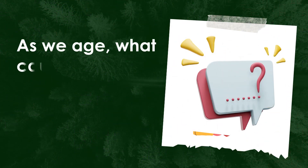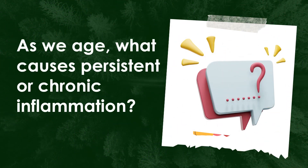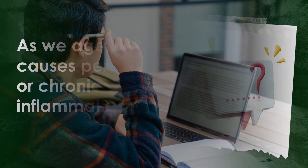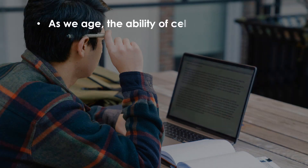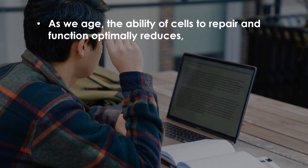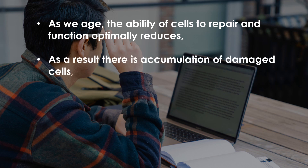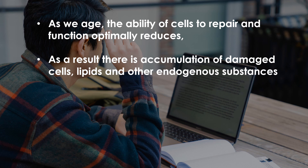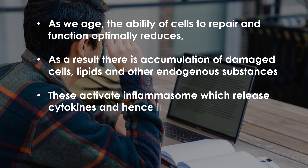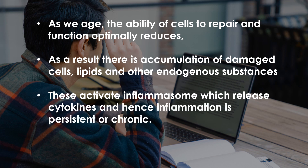As we age, what causes persistent or chronic inflammation? As we age, the ability of cells to repair and function optimally reduces. As a result, there is an accumulation of damaged cells, lipids, and other endogenous substances. These activate the inflammasome, which releases cytokines, and hence inflammation becomes persistent or chronic.